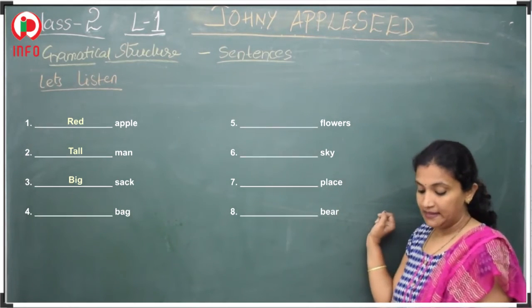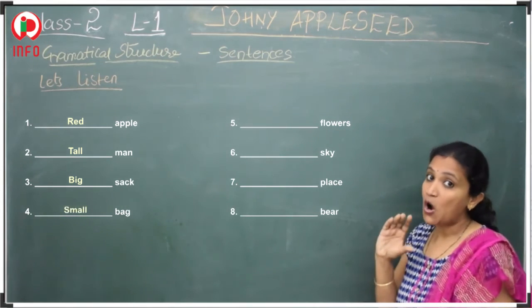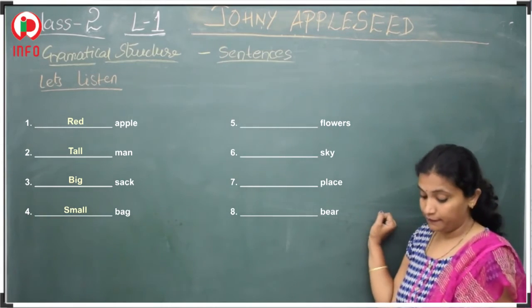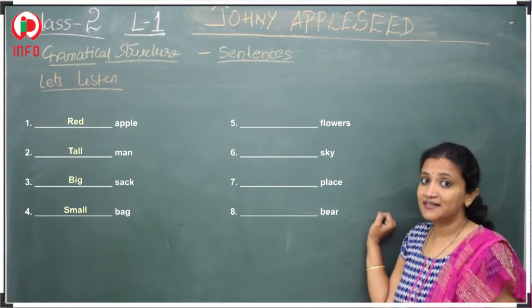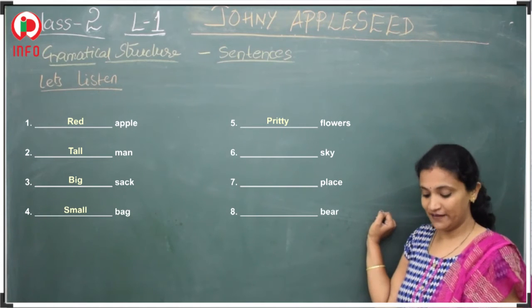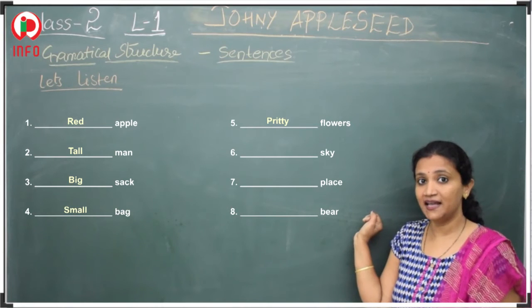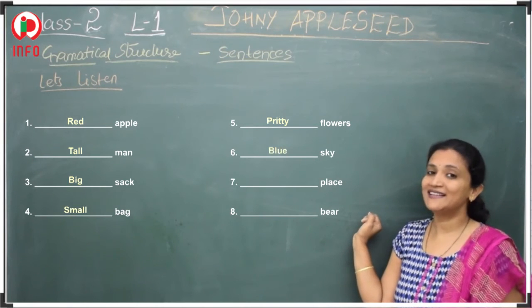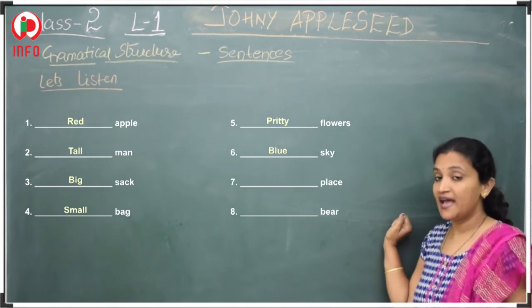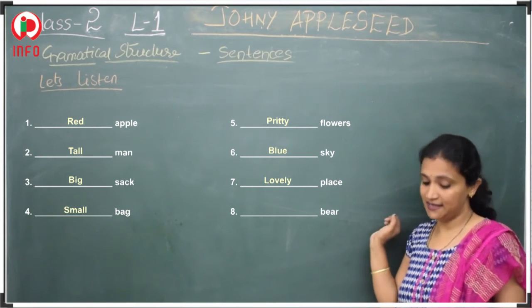Fourth one: dash bag. Small bag — yes, that is the correct word. Fifth one: dash flowers. Flowers are pretty — pretty flowers. Sixth one: dash sky. Have you seen the sky? Blue color sky — blue sky is the correct answer. Seventh one: dash place. Lovely place — lovely is the correct answer.